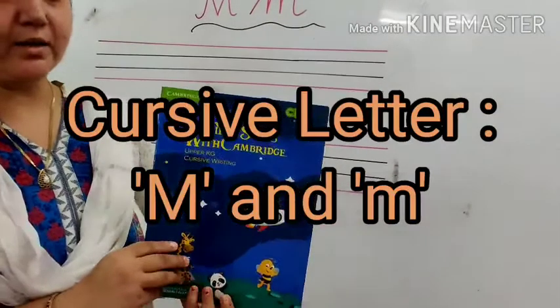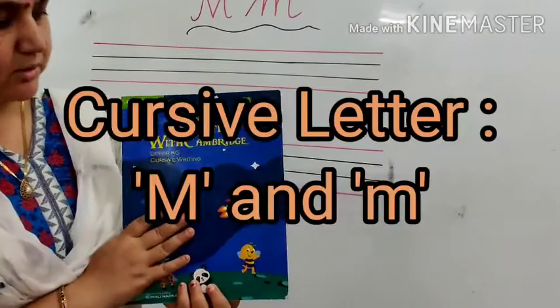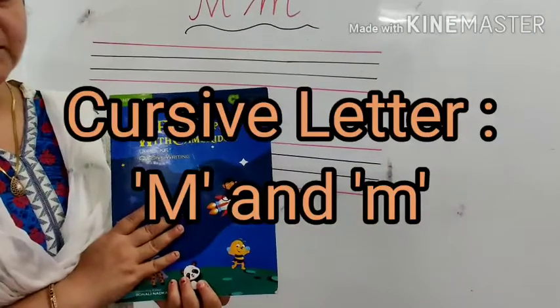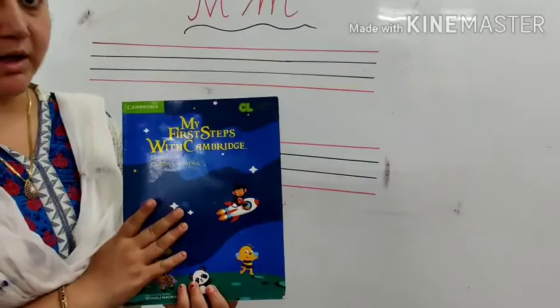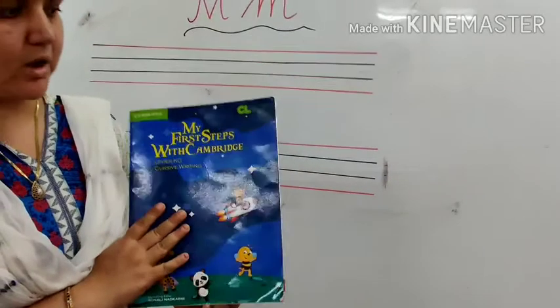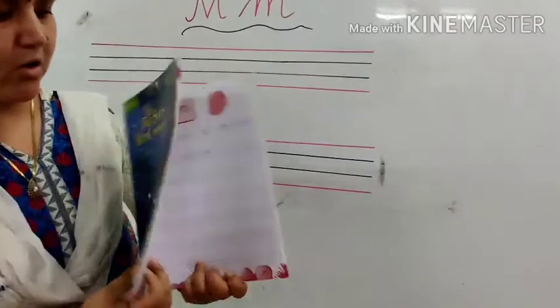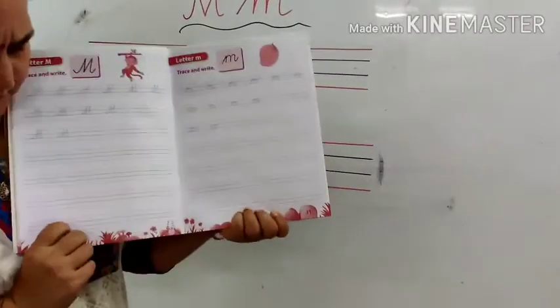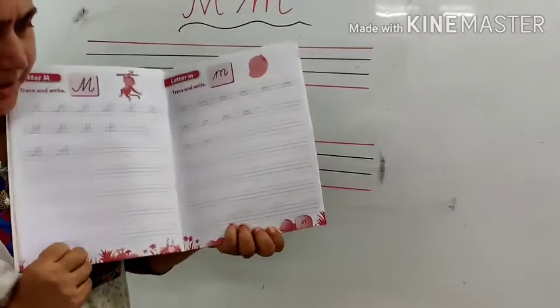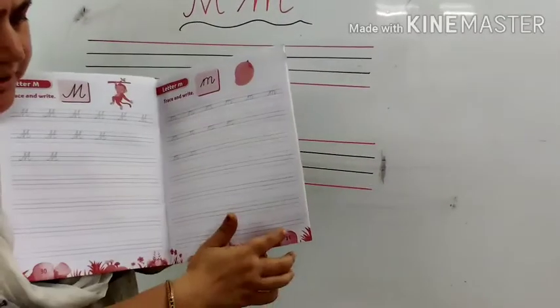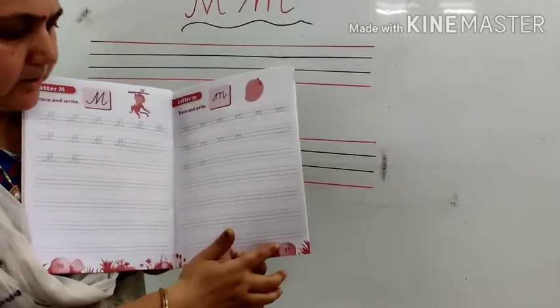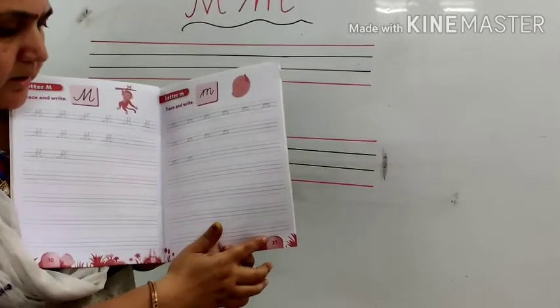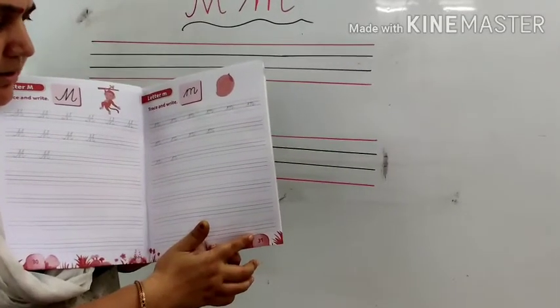Good morning kids. This is your cursive writing book. Open the page number 30 and 31. Clear children.